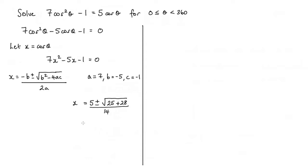Now let me just simplify this a little bit. So we have 5 plus or minus the square root of, that will give me 53, and that is all over 14. So clearly we have two values for x here: 5 plus root 53 over 14, and 5 minus root 53 over 14.